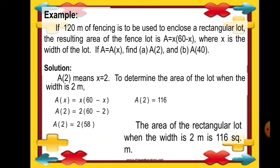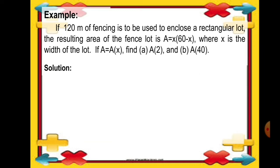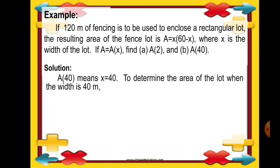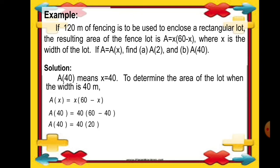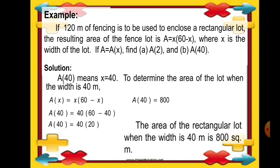Now let us solve for the area when the width is 40 meters. A of 40 means x is equal to 40. Using the same formula, A of x equals x times 60 minus x, we substitute 40 for x. So A of 40 is equal to 40 times the quantity of 60 minus 40, which gives 40 times 20, and we get 800. The area of the rectangular lot when the width is 40 meters is 800 square meters.